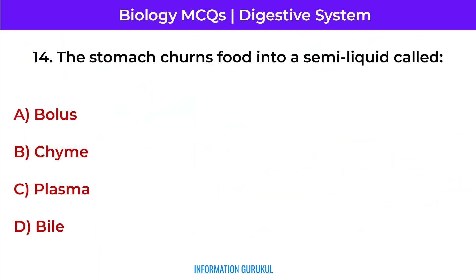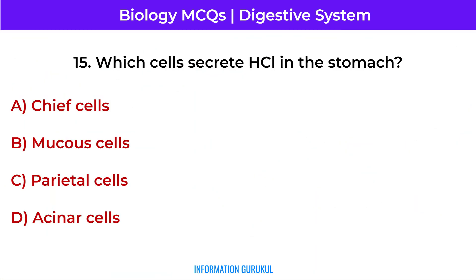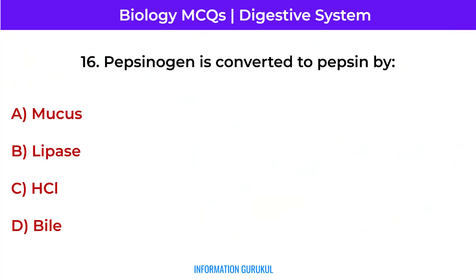The stomach churns food into a semi-liquid called chyme. Which cells secrete hydrochloric acid in the stomach? Parietal cells. Pepsinogen is converted to pepsin by hydrochloric acid.